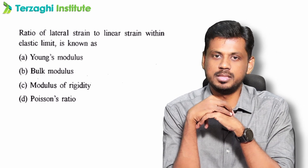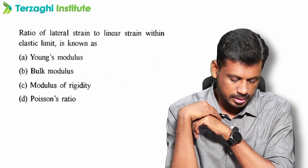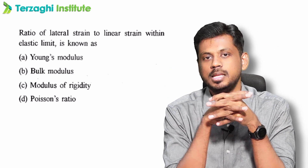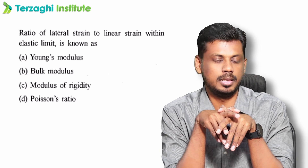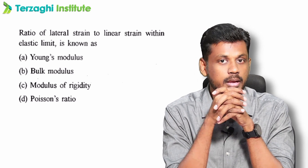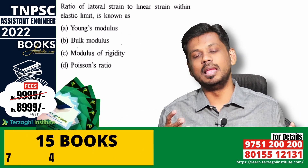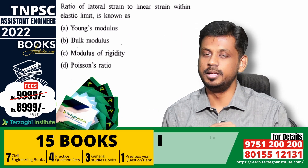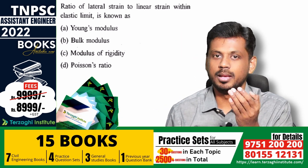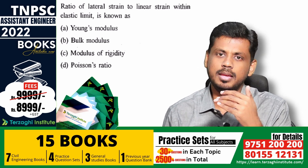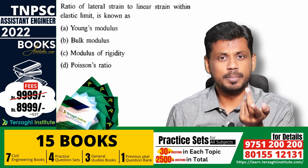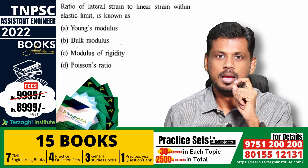First unit, question 1 — Stresses and Strains: The ratio of lateral strain to linear strain within the elastic limit is known as Poisson's ratio. Within the elastic limit, it is lateral strain divided by longitudinal strain. Some students get confused between lateral by linear versus linear by lateral — the correct answer is lateral strain divided by longitudinal strain.